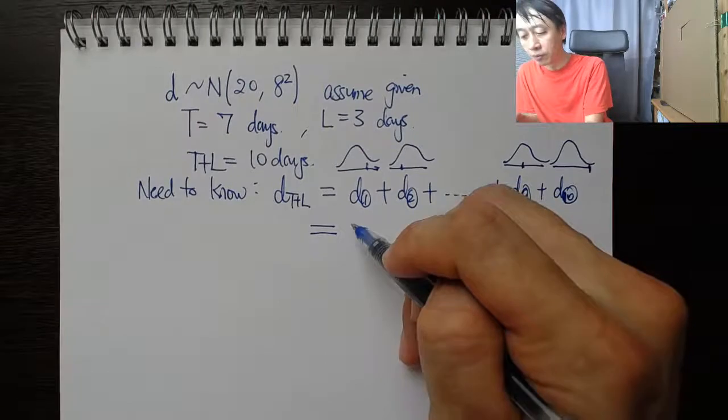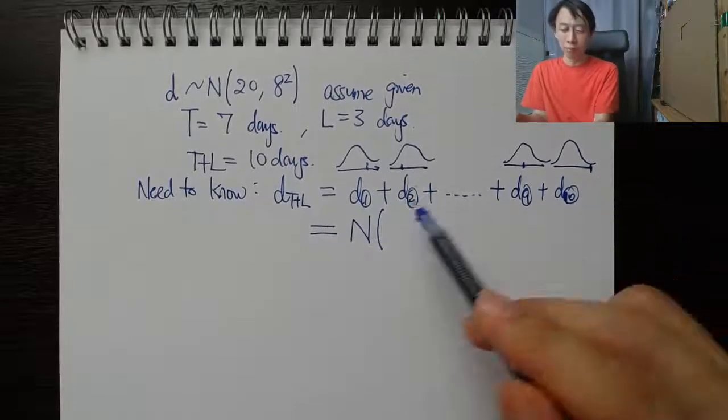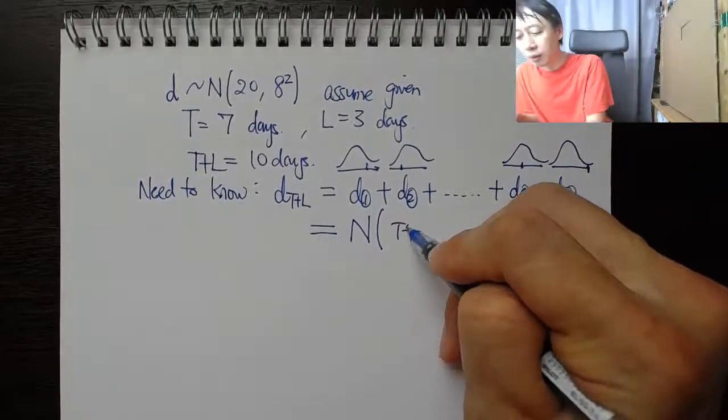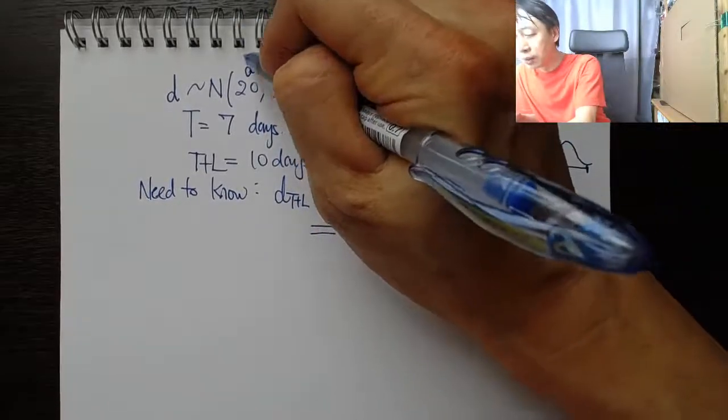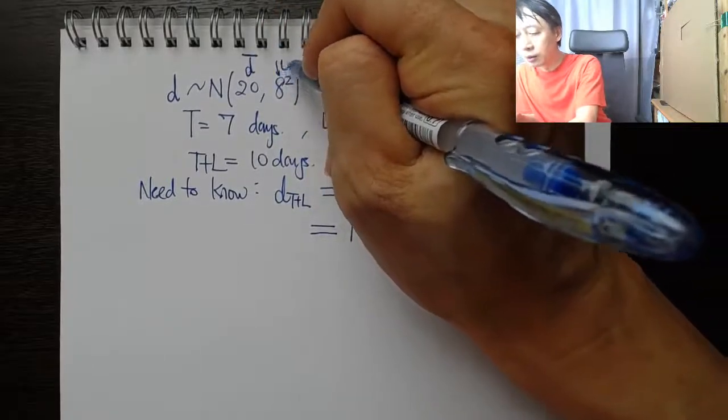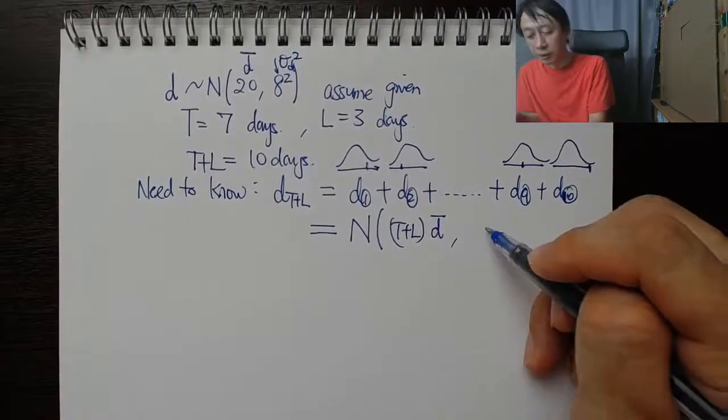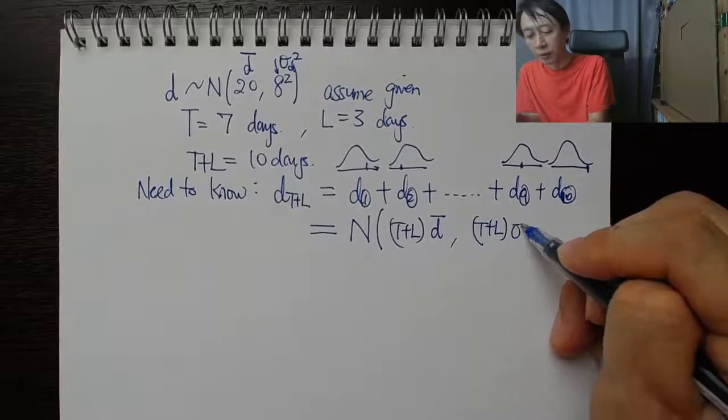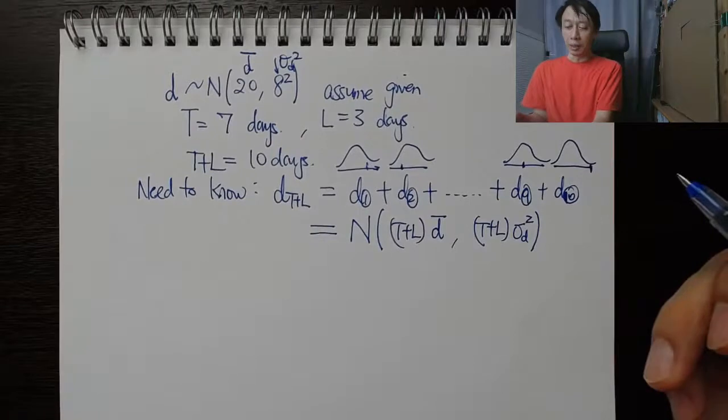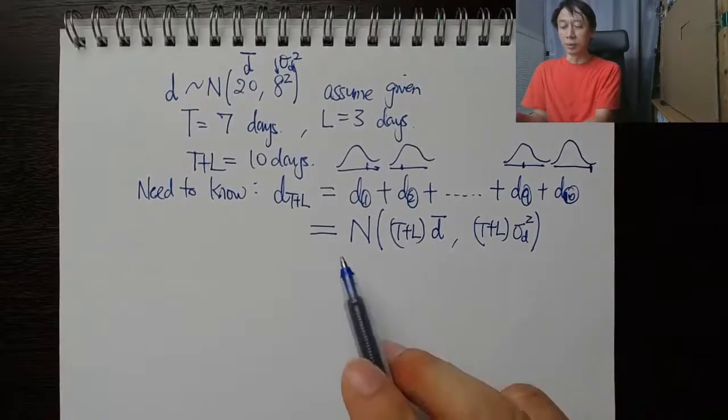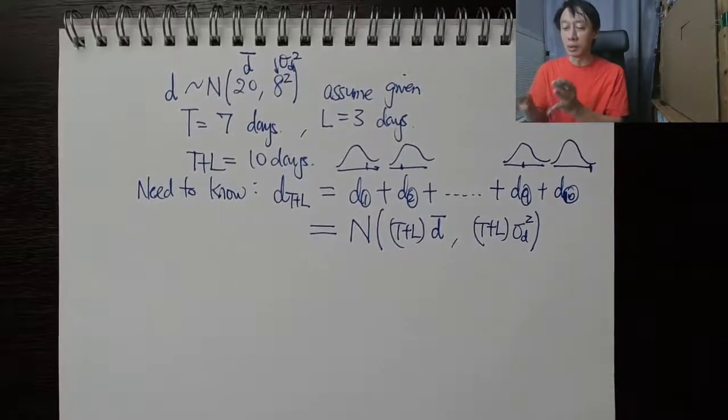The mean will be the sum of all the T plus L days, so that will be T plus L times the daily demand mean. The variance will be T plus L times the variance of the daily demand. It's working out very much like how we derive the demand during the lead time given daily demand.